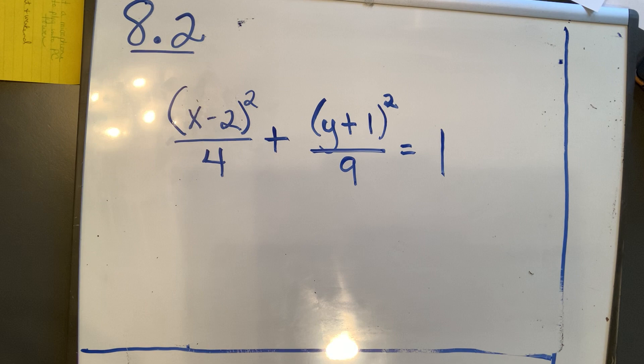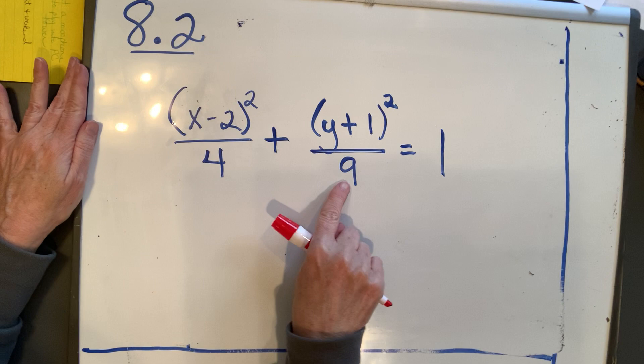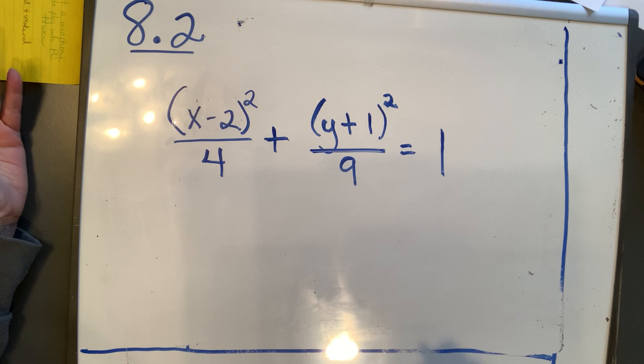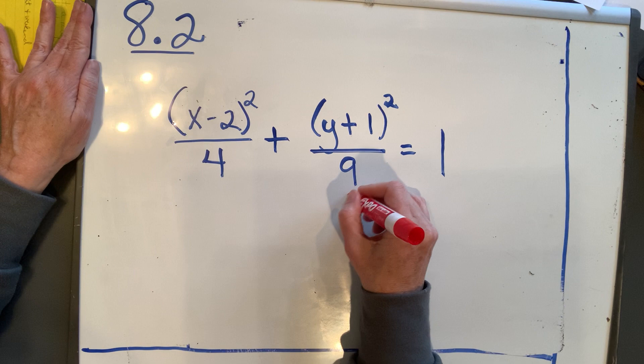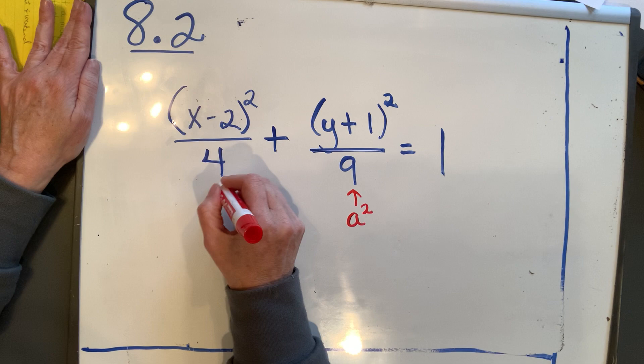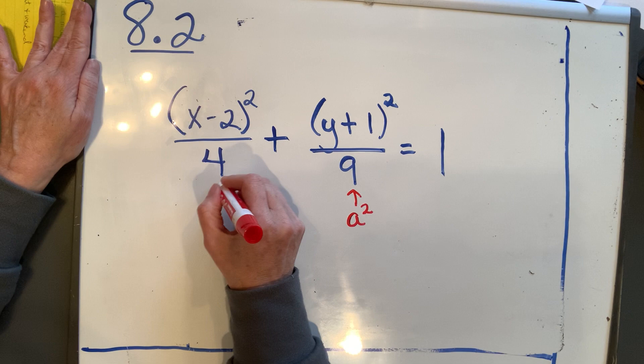Let's see what we can tell from this equation. The way I know it's an ellipse and not a circle is because if it were a circle, these two numbers — the 4 and the 9 — would be the same. But because they're different, it's an ellipse. Because the larger denominator is under the y's, a squared equals 9, and b squared equals 4. Because a squared is under the y's, we know this ellipse is vertical.